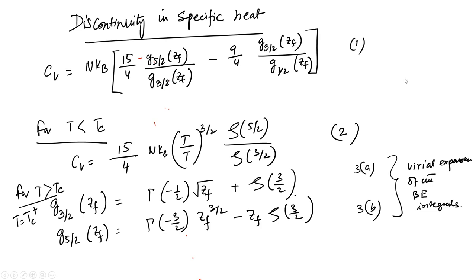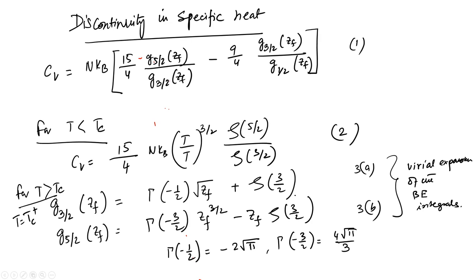Given these expressions, we also need that gamma(-1/2) equals minus 2 root pi, and gamma(-3/2) equals 4 root pi over 3. These are all that is needed for us to calculate the specific heat for T just greater than Tc.